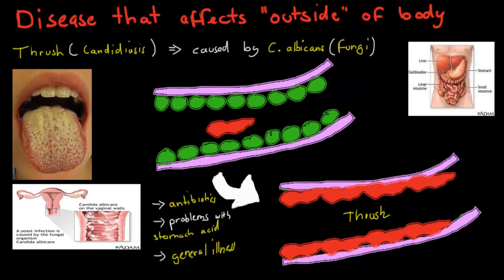One example of a disease that is actually caused on the outside of our body — and remember, when we talk about outside here, we're not just talking about our skin. Even our intestinal tract, which is obviously inside our body, is still outside by our definition. Inside is just blood; anything else is outside. One example of what is actually caused outside our body would be thrush, also known as candidiasis. That's caused by a fungus or yeast called C. albicans.